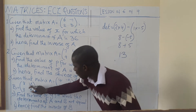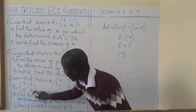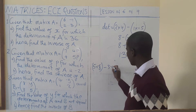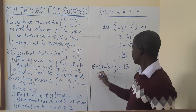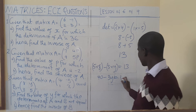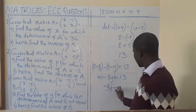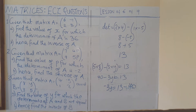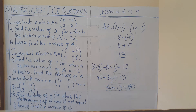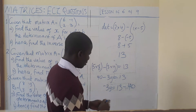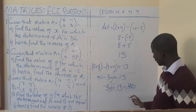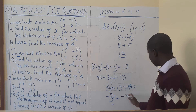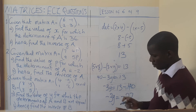Now we use 13 to find the value of Y. We set up: 5 multiplied by 8 minus 3 multiplied by Y equals 13. This gives us 40 minus 3Y equals 13. So minus 3Y equals 13 minus 40, which gives us negative 3Y equals negative 27.